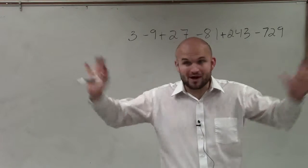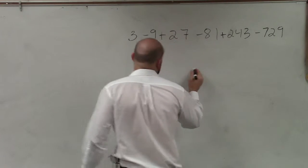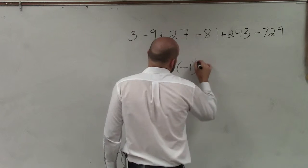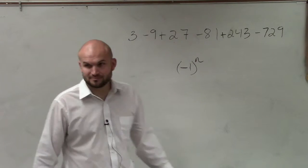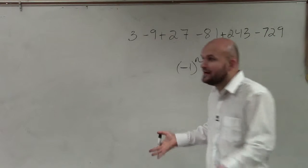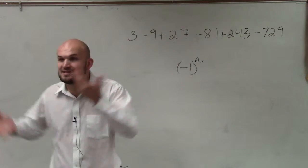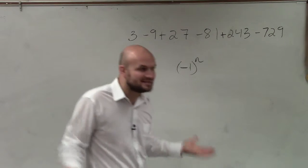So automatically, before I even go anywhere further, I know that my summation has to include this. That is our alternating sign rule. Anytime we see alternating signs, at least have that written down.